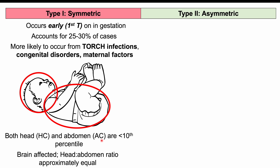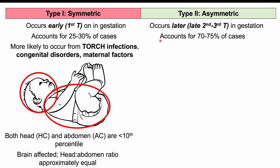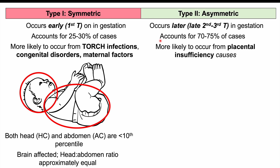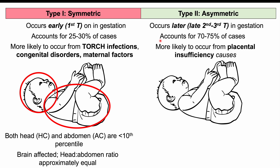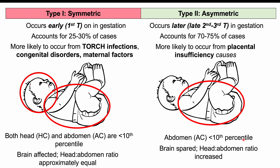Type 2, or asymmetric FGR, is most likely to occur later in gestation — typically in the late second to third trimester. It is the most common type, accounting for 70–75% of cases, and is more likely caused by placental insufficiency, such as preeclampsia. In asymmetric FGR, the abdomen is primarily affected — abdominal circumference is less than the 10th percentile — but the head is spared, the brain is spared, and we see an increased head-to-abdomen ratio.